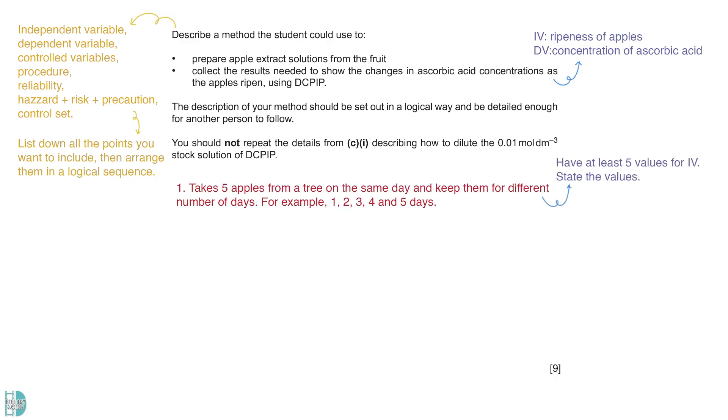We should take 5 apples from a tree on the same day. Then, keep them for 5 different periods, for example, 1 to 5 days. The apples are taken from the same tree. This is one of the control variables.